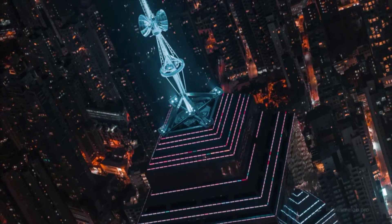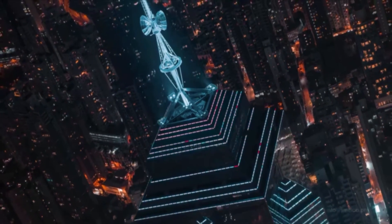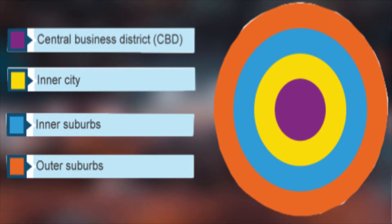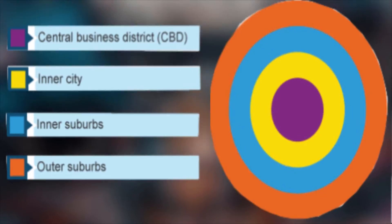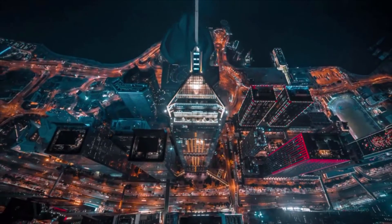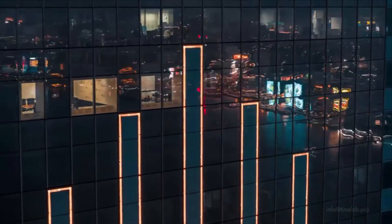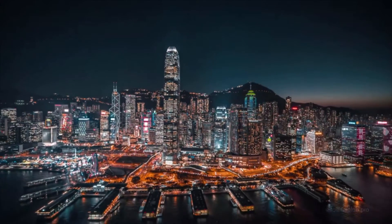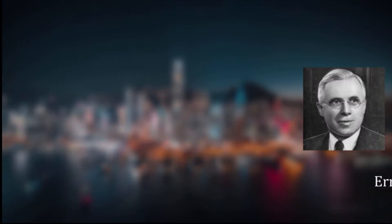Cities generally have extensive systems for urban land use, including a central commercial area, surrounding industrial zone, and suburban outer zones expanding and developing with city growth. Most cities can follow a similar structure, which can be represented by different models — for instance, the Burgess Concentric Model.